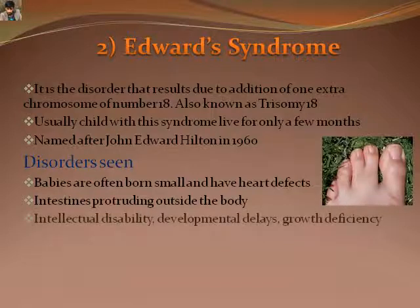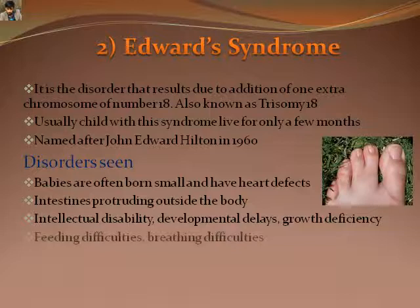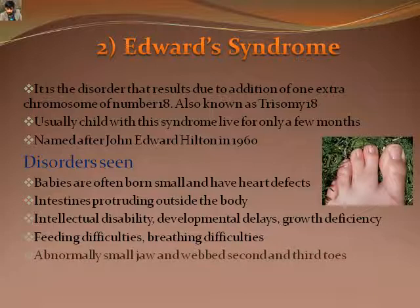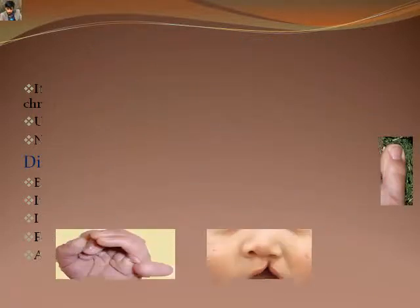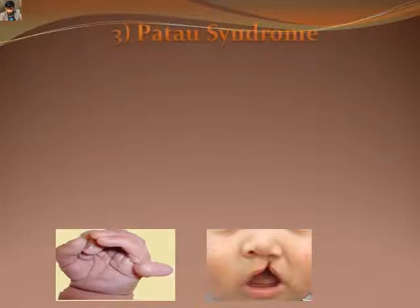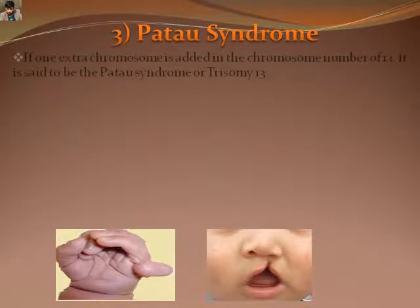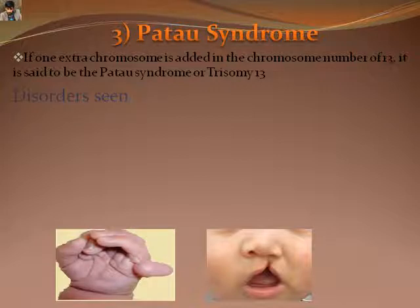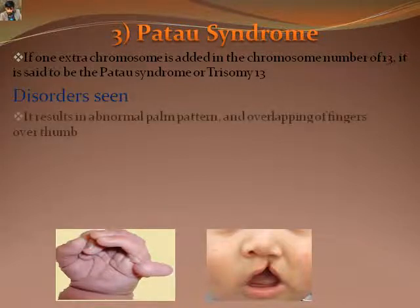Patau syndrome, also known as trisomy 13, presents with disorders including heart defects, abnormal palm pattern, motor disorders, eye defects, cleft lip, and other abnormalities seen in affected human beings.